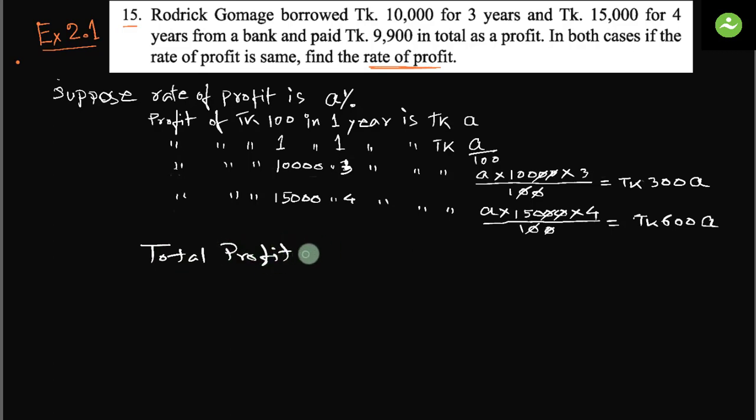You can see we can get this from here: 300a, taka 600a equals to taka 900a.